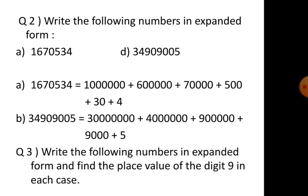Question 2: write the following numbers in expanded form. You can make the place value chart directly. Take the first digit and place zeros for the rest. After adding all the parts together, you will get the same answer.